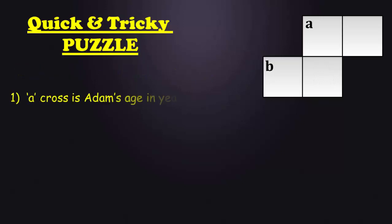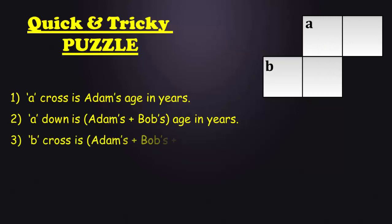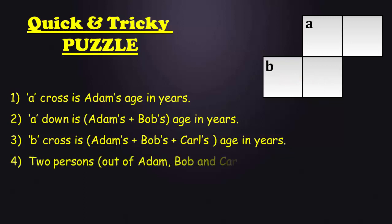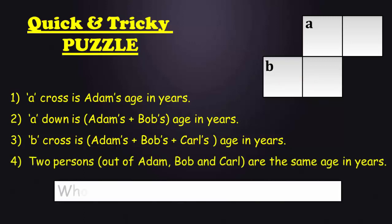A cross is Adam's age in years. A down is addition of Adam's age and Bob's age in years. B cross is Adam's age plus Bob's age plus Carl's age in years. Two persons out of three are the same age. Who is a different age from other two?